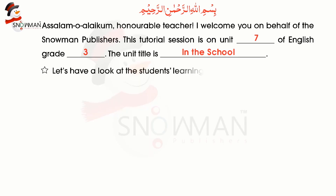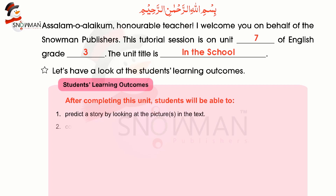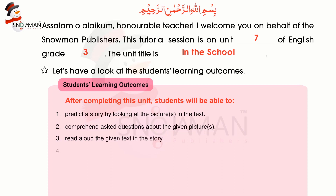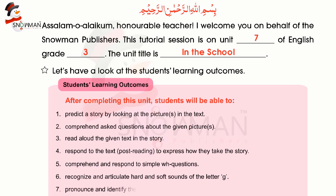Let's have a look at the students' learning outcomes. After completing this unit, students will be able to predict a story by looking at pictures in the text, comprehend and answer questions about the given pictures, read aloud the given text in the story, and respond to the text post-reading to express how they take the story, as well as comprehend and respond to simple WH questions.